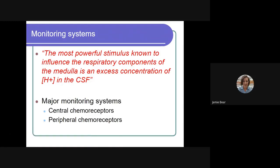Let's now go into monitoring systems. There are two monitoring systems in our body, the central and peripheral chemoreceptors. And as the name states, they respond to the chemical amount in those chemoreceptors.